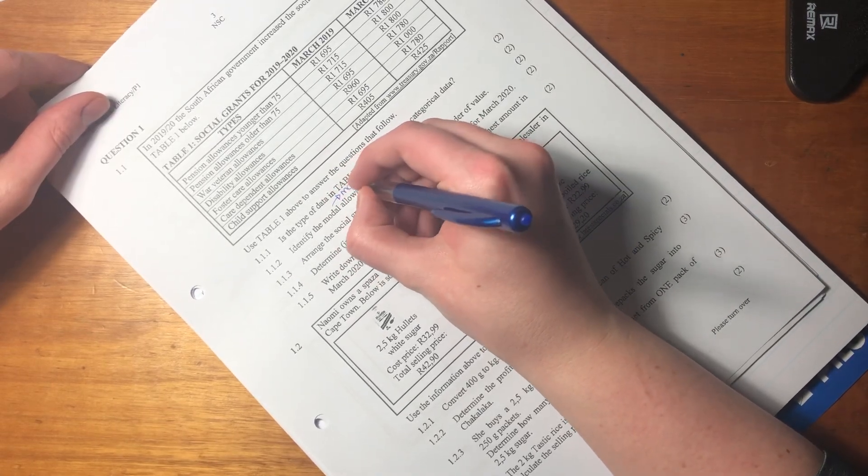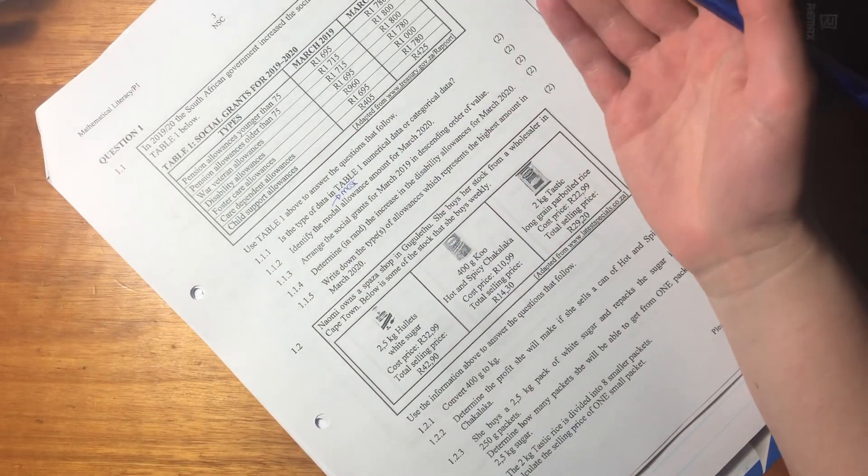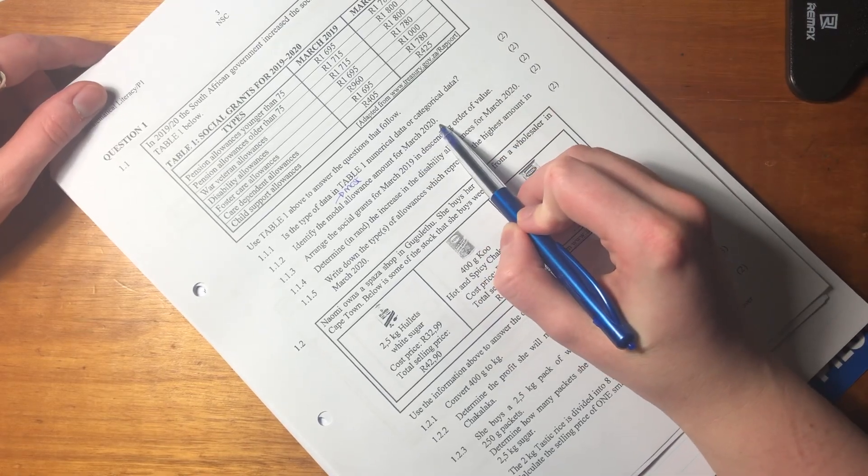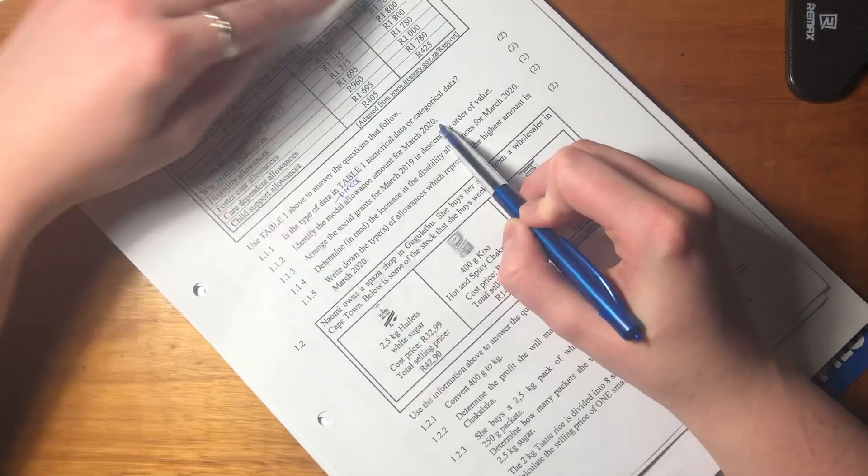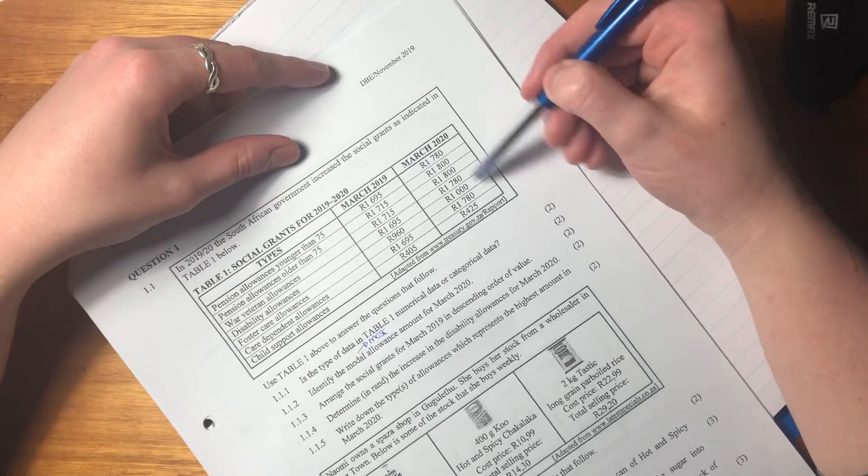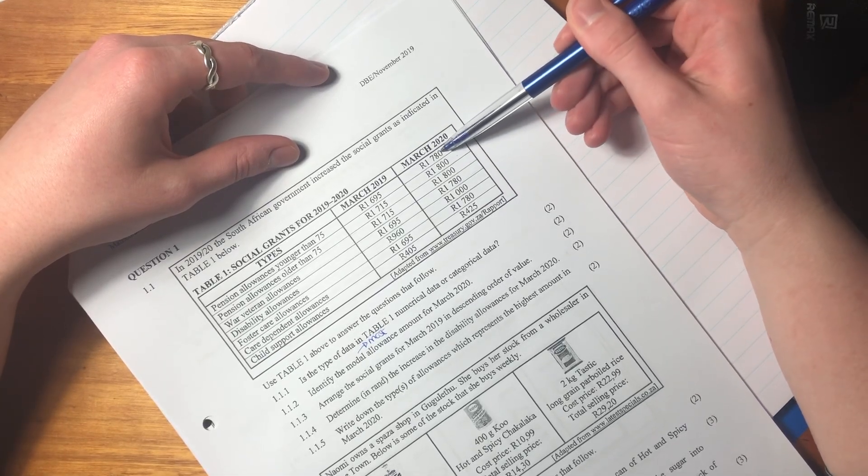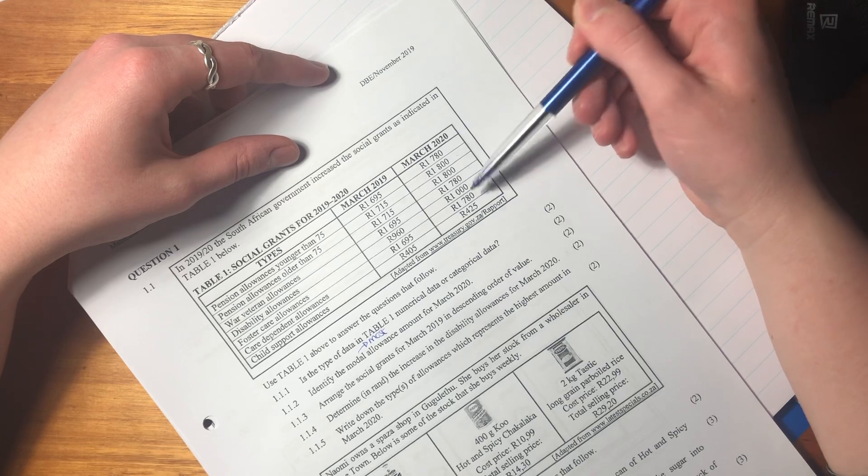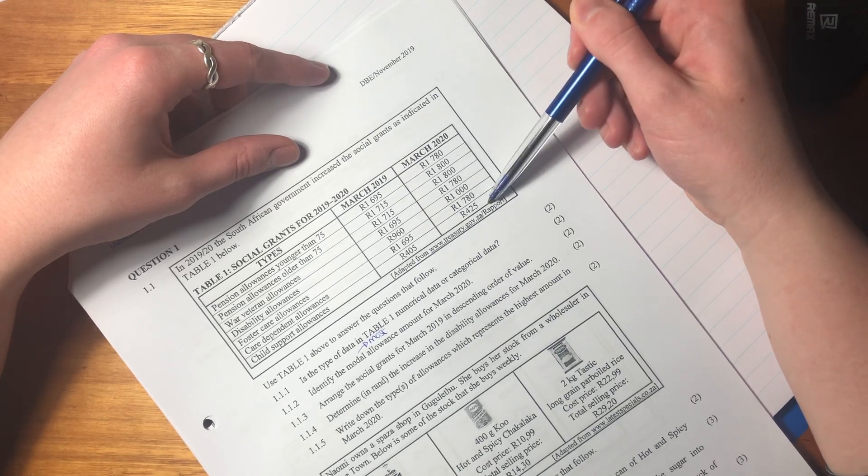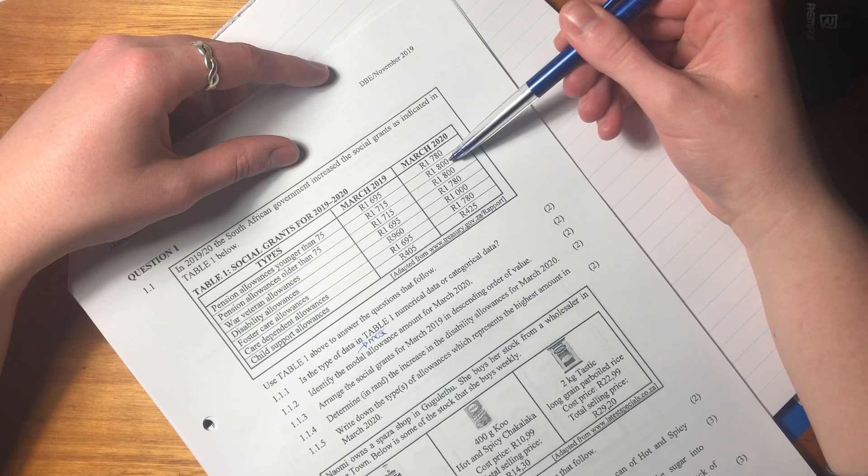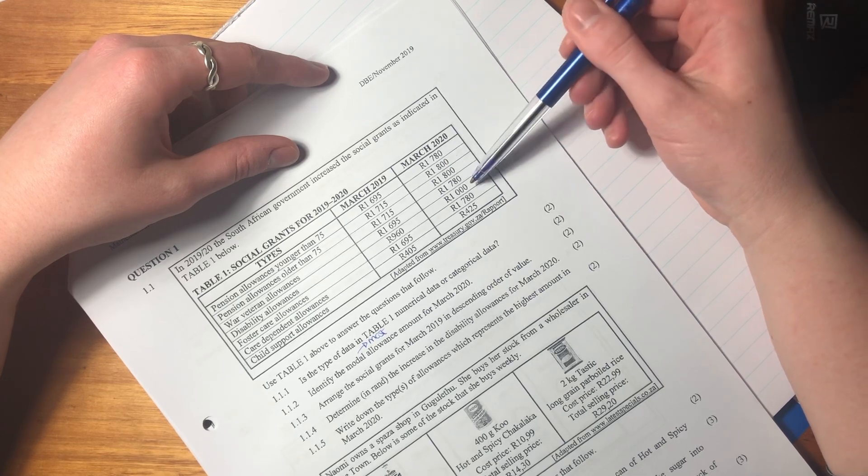What's important here is that we understand what the word modal means. Modal actually means most, or what number appears most. Let's also remember that it's March 2020, so we want to make sure we're looking in the correct column. We have 1780 and we see that that appears three times.